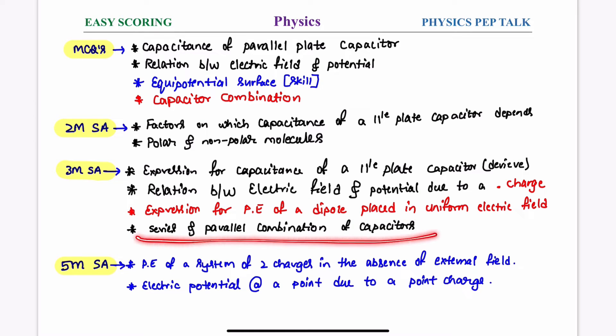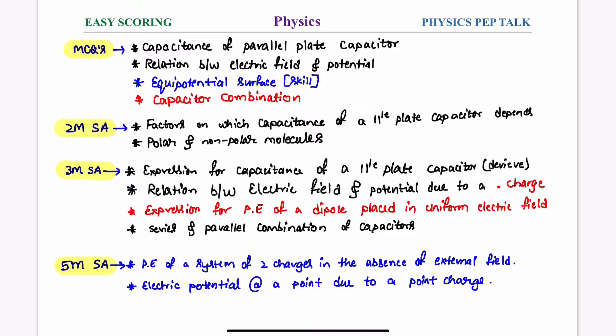Series and parallel combination of capacitors is a 3-mark topic. These derivations can also be asked for 5 marks. The specific marks depend on your luck regarding what appears in the exam.